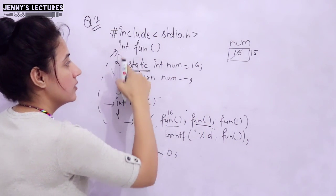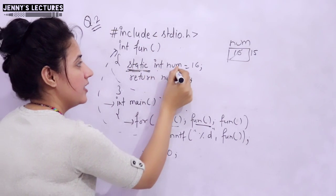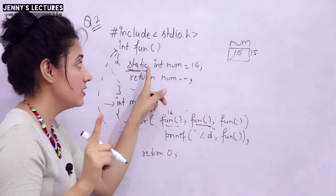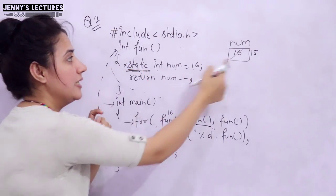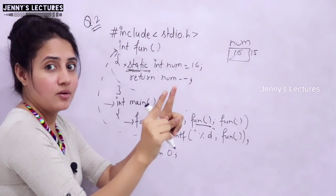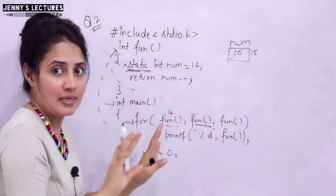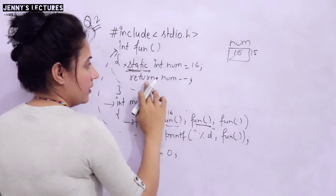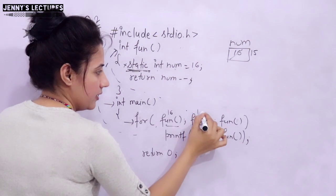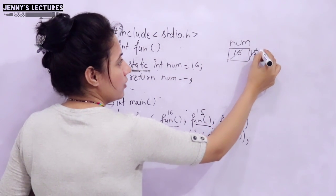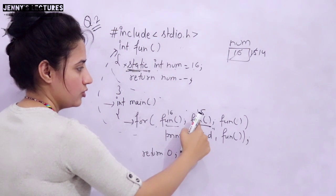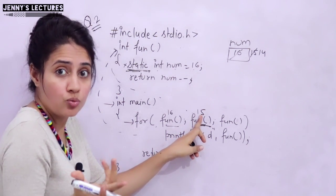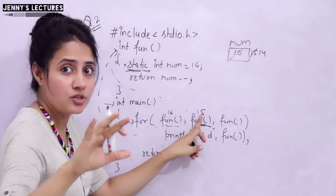Next, the condition is checked by calling the function again. Now the statement 'static int num = 16' would not re-initialize — because this is static, the initialization is ignored and it retains its previous value of 15. This is the tricky part of this question. So num is 15 — it returns 15 and becomes 14. The condition is 15, which is not 0, so it is true. Any value other than 0 is true.